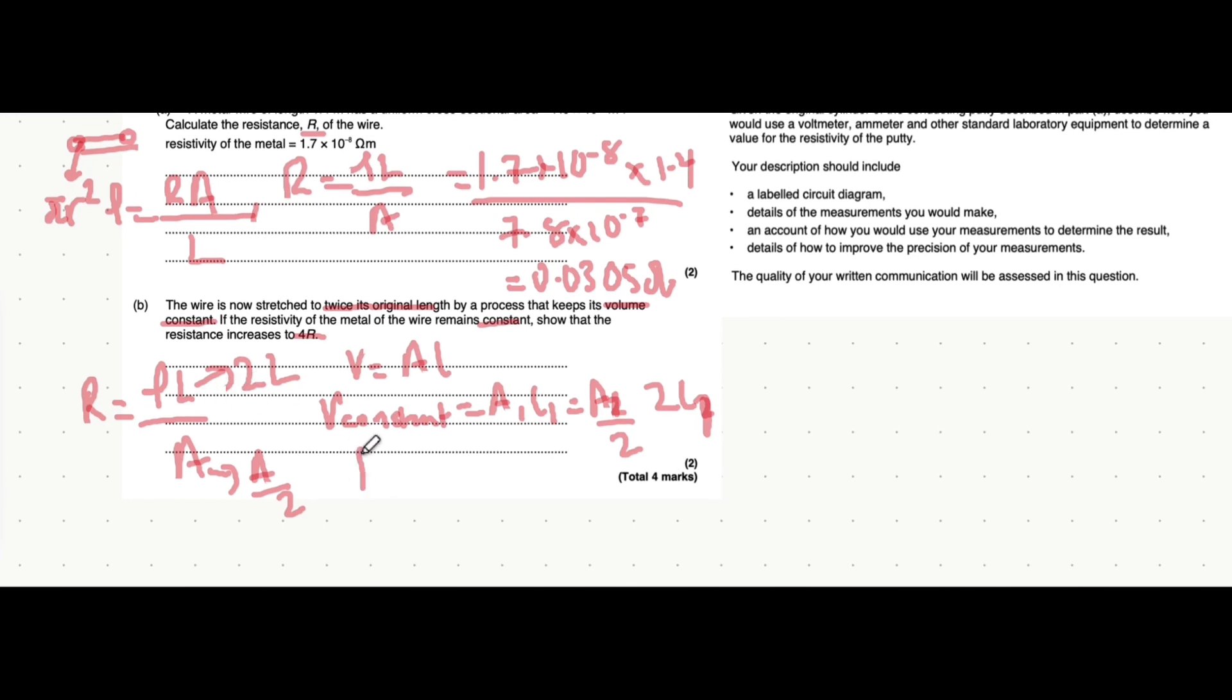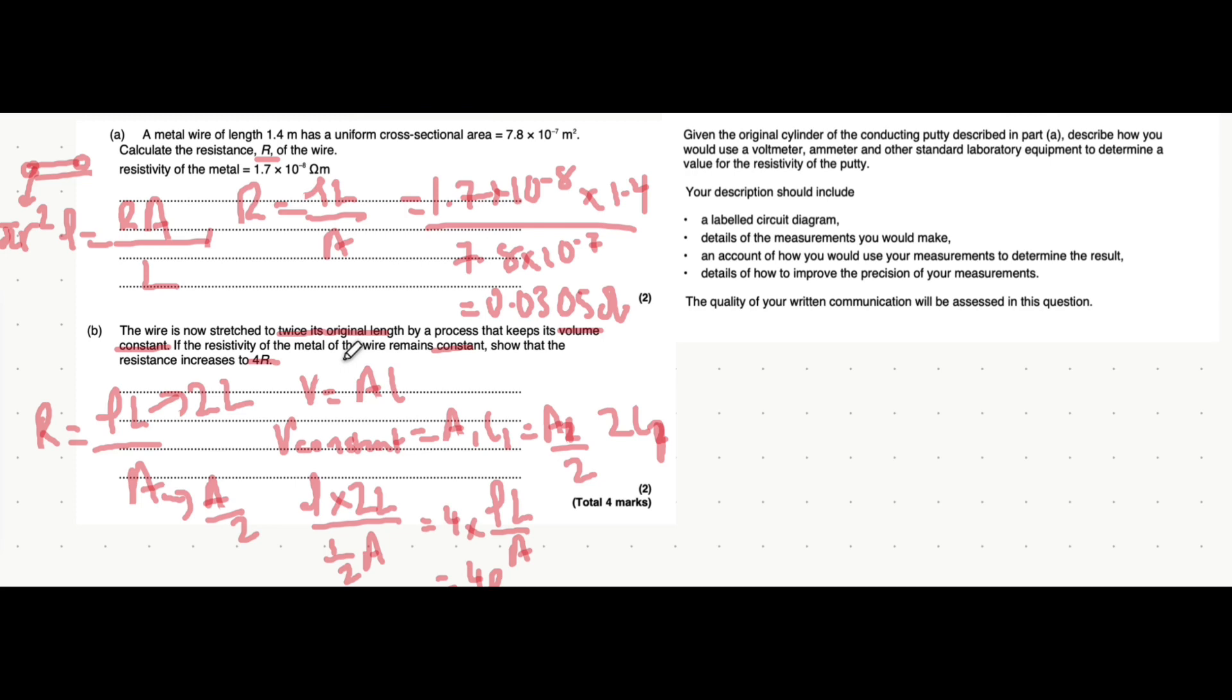Now, because, let's separate this actually. So, we have rho times 2L all over a half A. Well, 2 divided by a half is just 4, isn't it? So, we can write this as 4 times rho L over A. And then we can replace rho L over A with resistance. And we can say that the resistance becomes 4 times the amount when the length is doubled. And that's because doubling the length halves the area in order to maintain a constant volume. It's quite a difficult question there.